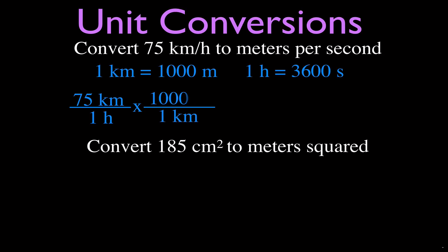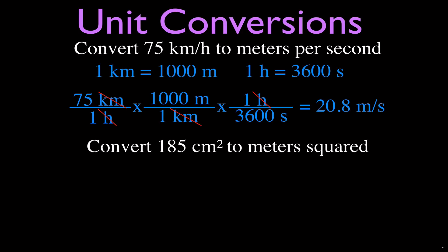First, convert kilometers to meters: put one kilometer in the bottom, one thousand meters on top — the kilometers cancel. Now we have meters per hour, but we want meters per second. For the second conversion, the hour is in the bottom, so the hour goes on top to cancel it, and 3600 seconds goes in the bottom. Multiply all the top values: 75 times 1000, then divide by 3600. The result is 20.8 meters per second.